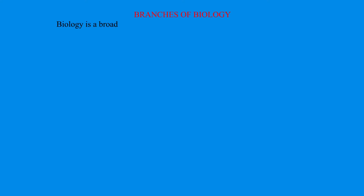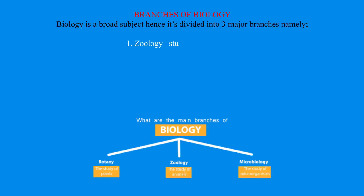Branches of biology. Biology is a broad subject, hence it's divided into three major branches. The first is Zoology, the study of animal life — for example, how animals feed, move, reproduce and breathe.